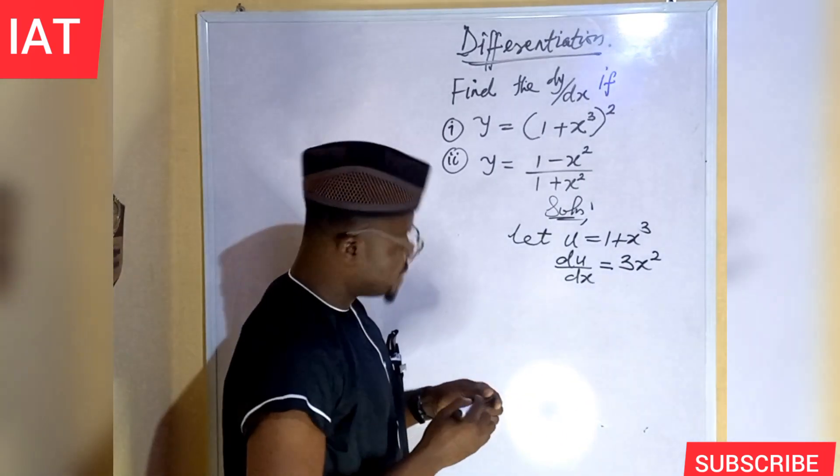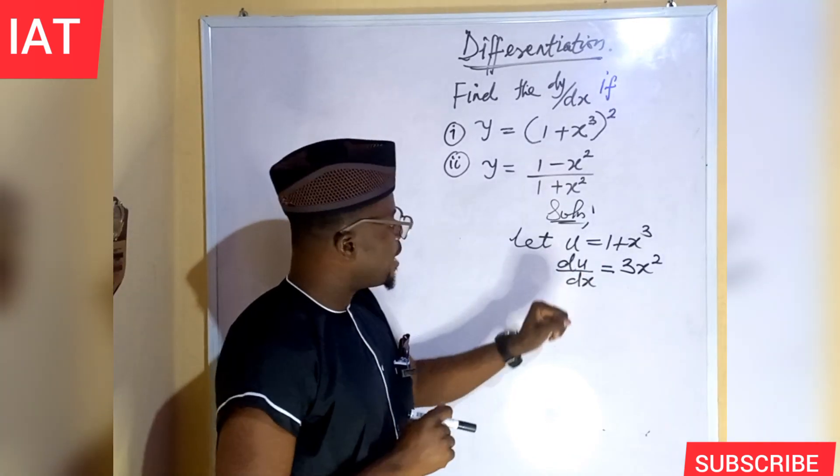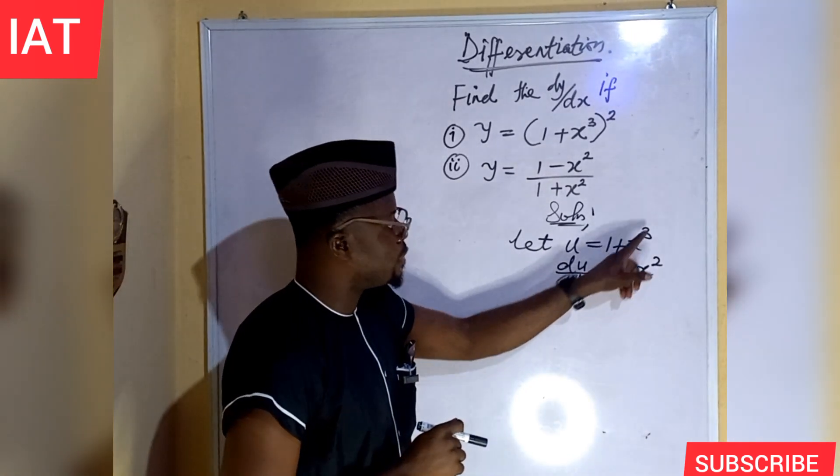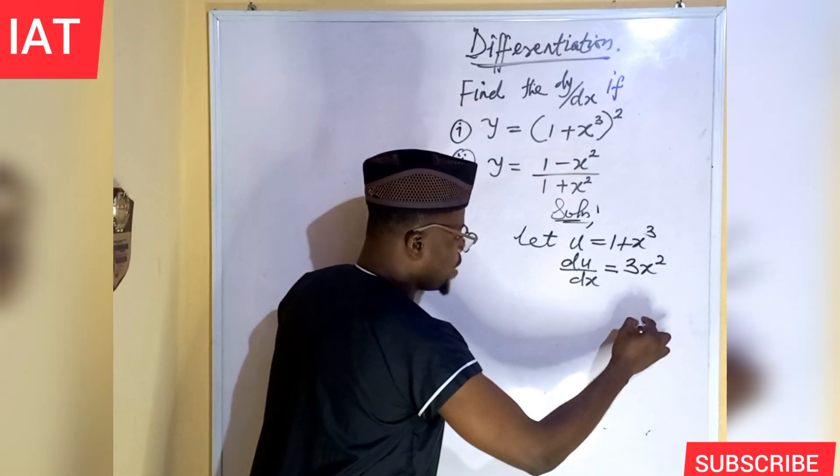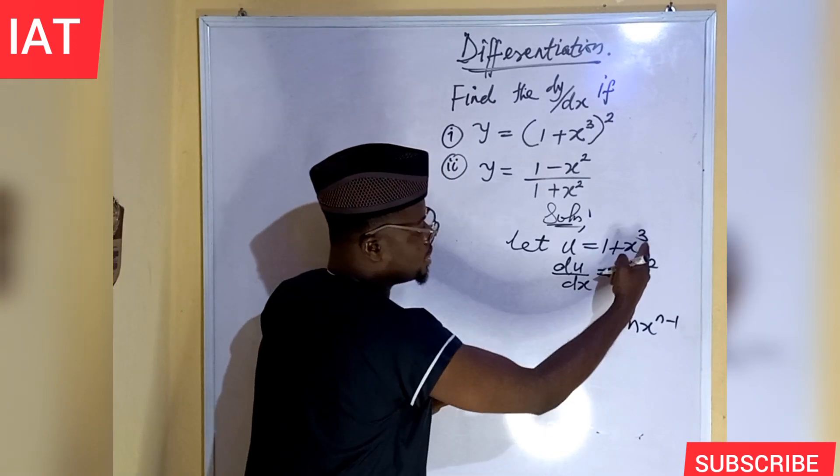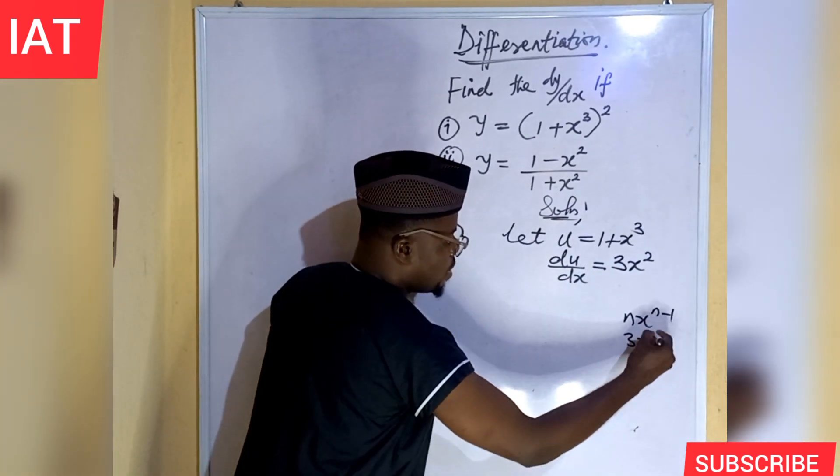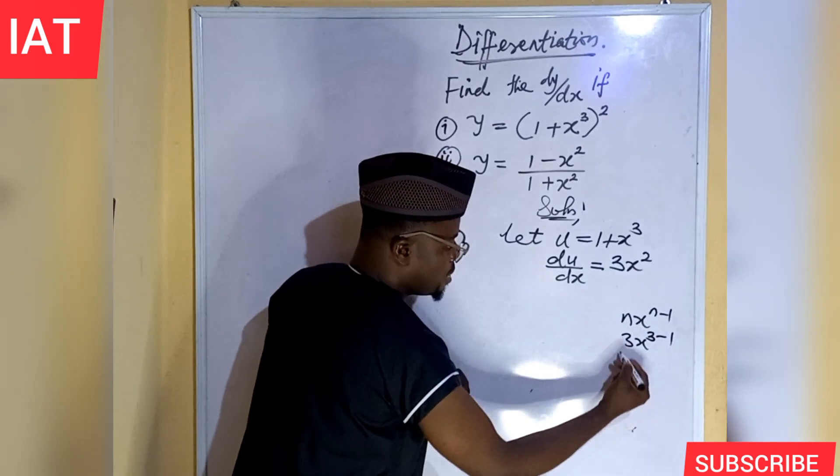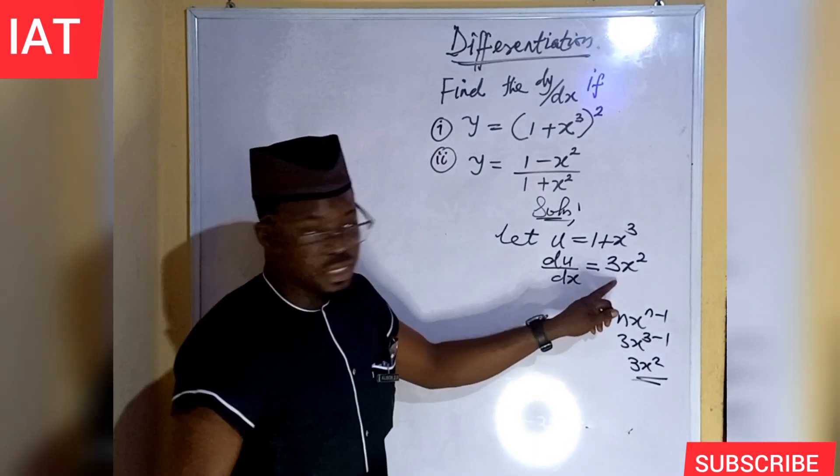The reason is because the differentiation of 1, which is a constant, is 0. And the differentiation of x raised to the power of 3 using the general formula, which is dy/dx equal to n x raised to the power of n minus 1. This is the power which is 3. Anywhere you see n, you can put in 3. I'll have 3 minus 1. This will give us 3x raised to the power of 2. That's how I got this answer.